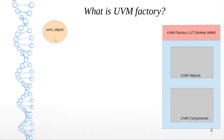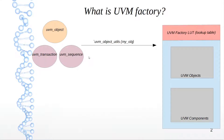If you have a UVM transaction, UVM sequence, or you're extending from UVM sequence item — all of which inherently extend from UVM object — then you want to make sure you use a macro called `uvm_object_utils`. This macro is added into your class definition once you've declared your class, and it registers that class in the factory. The argument to this macro corresponds to the name of whatever class you are declaring.